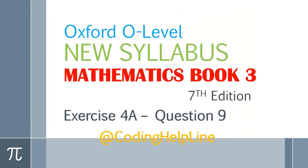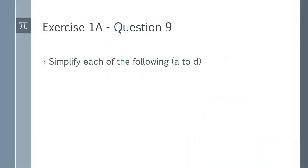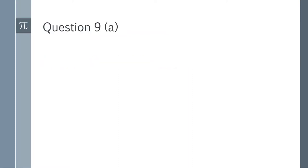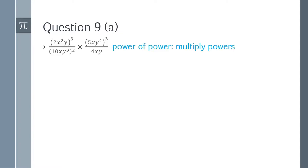Hello guys, welcome to my channel. In this video I am going to solve question 9, an advanced question in exercise 4a from mathematics book 3, new syllabus 7th edition. Question 9: simplify each of the following — it has four sections.